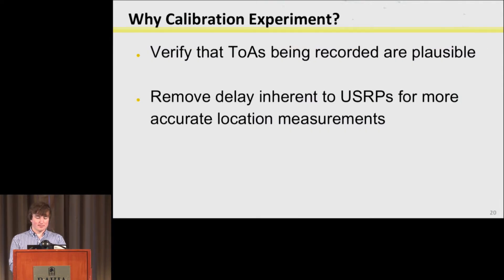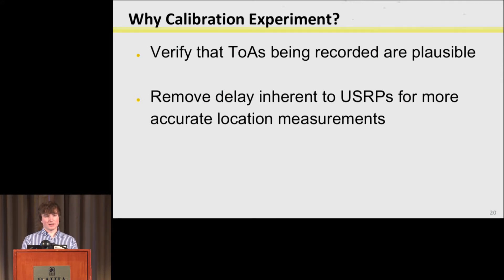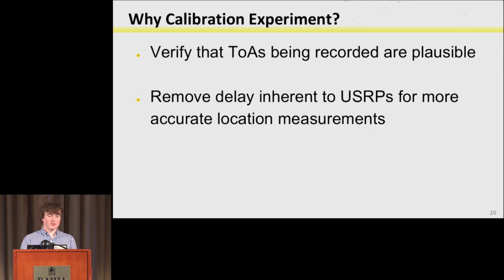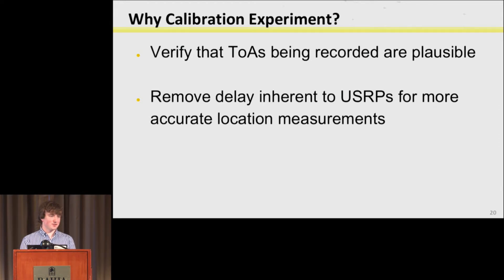Since we have B200s, they're not all exactly identical. The amount of delay when a signal hits the USRP and is registered as a sample can vary between boxes on the order of nanoseconds — which doesn't sound like a big deal, but at the speed of light nanoseconds are significant, roughly 30 feet per nanosecond. We also want to verify that all the TOAs we're recording to start these calculations are plausible.